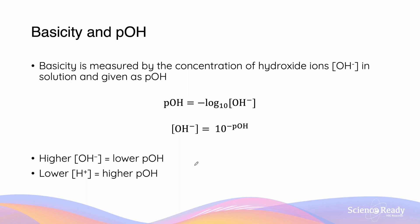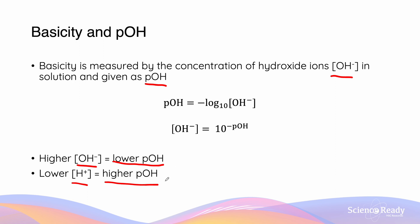Basicity is the opposite of acidity, and we measure it as the concentration of hydroxide ions, OH minus, in solution, given as pOH — the potential of hydroxide. A higher OH− concentration means a lower pOH, and a lower H+ concentration means a higher pOH. So a pOH of 2 is more basic than a pOH of 4.